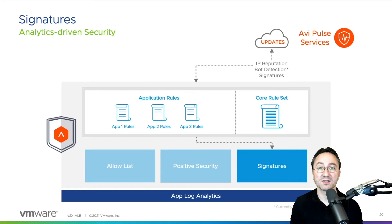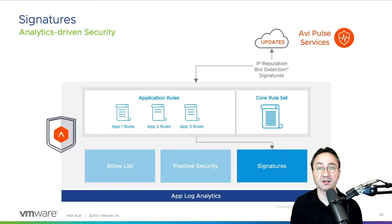As the second type of signatures, we have the OWASP core rule set included, which provides protection against the OWASP top 10 attack types like SQL injection, cross-site scripting, remote code execution, and many more. To help the admin tuning the OWASP policy, we offer our exception workflow, incredibly detailed attack and attacker analytics, and correlated views over time of how the OWASP policy interacts with the application traffic. Together, the application rules and the CRS signatures provide a comprehensive signature protection for your applications delivered by the AV platform.